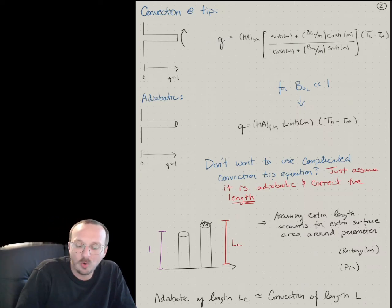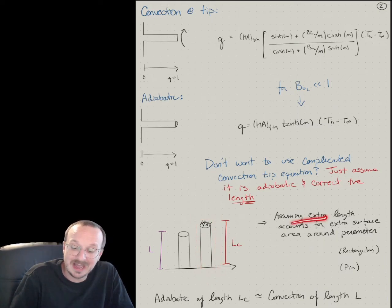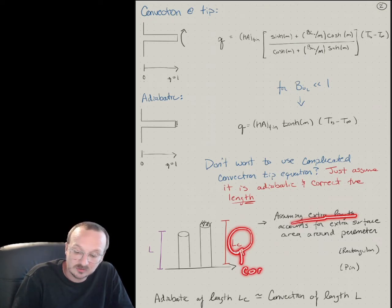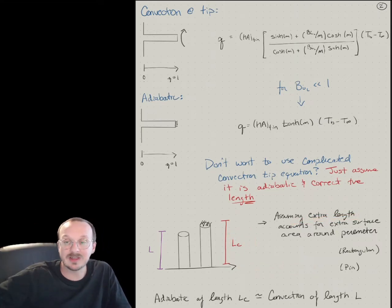And so the idea is always use the adiabatic fin tip, but assume that the extra length, you're going to use an extra length LC, which is corrected. This is the corrected length, accounts for the fact that you're using the adiabatic fin tip.